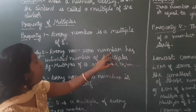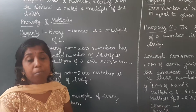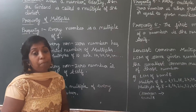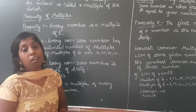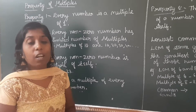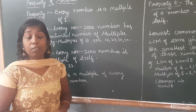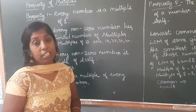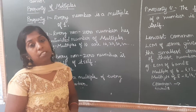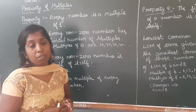Second property: every non-zero number has an unlimited number of multiples. Non-zero numbers can go on and on, so that number has unlimited multiples. For example, the multiples of 10 are: 10, 20, 30, 40, 50, 60, 70, 80 and so on. It has n number of multiples — the numbers go on.